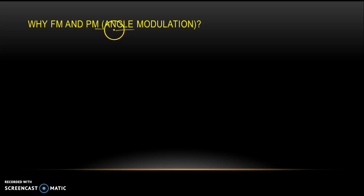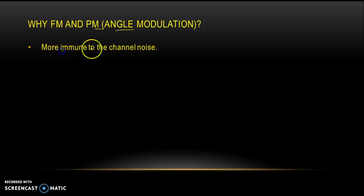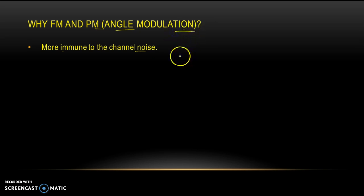There are various pros of angle modulation. The very first is that it is more immune to channel noise. As we know, amplitude modulated waves are very prone to channel noise — a lot of channel noise can totally distort the signal and wipe it out entirely. Our task is to produce a technique such that the message can be transmitted over a long distance with less channel noise. So angle modulated wave is more immune to channel noise — that's a very important aspect.